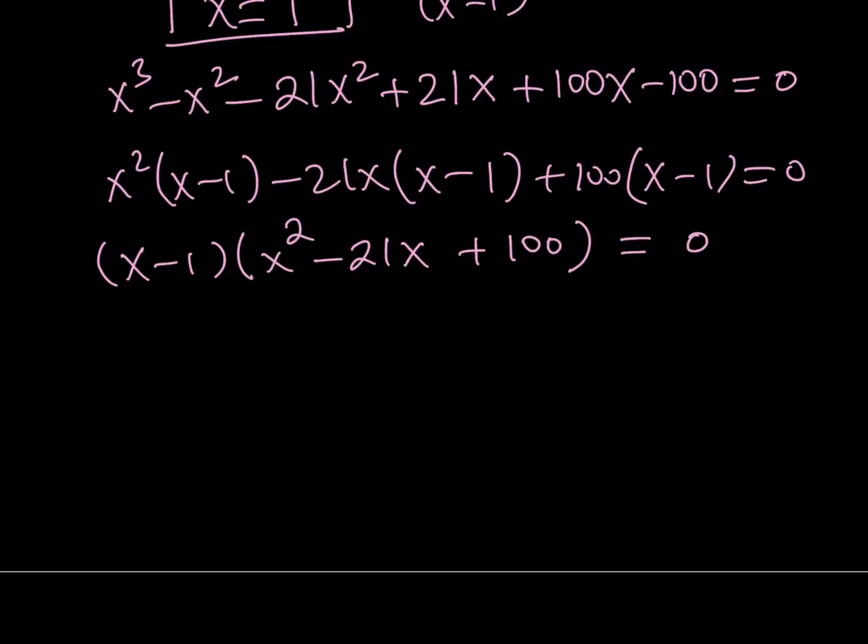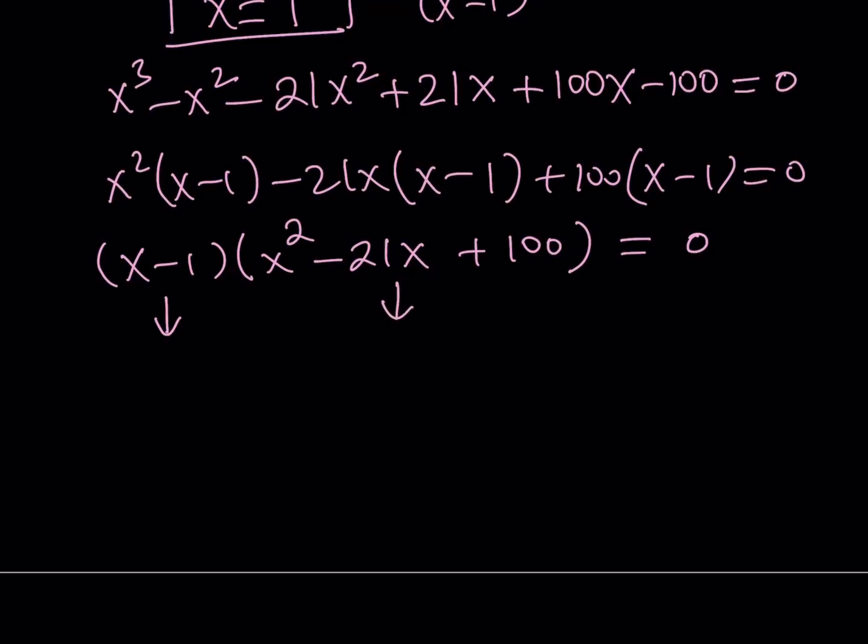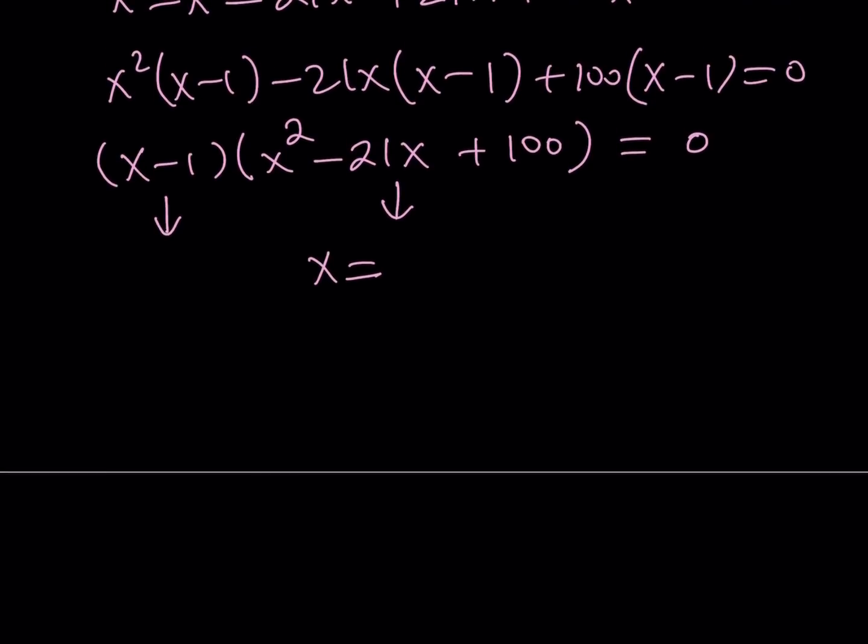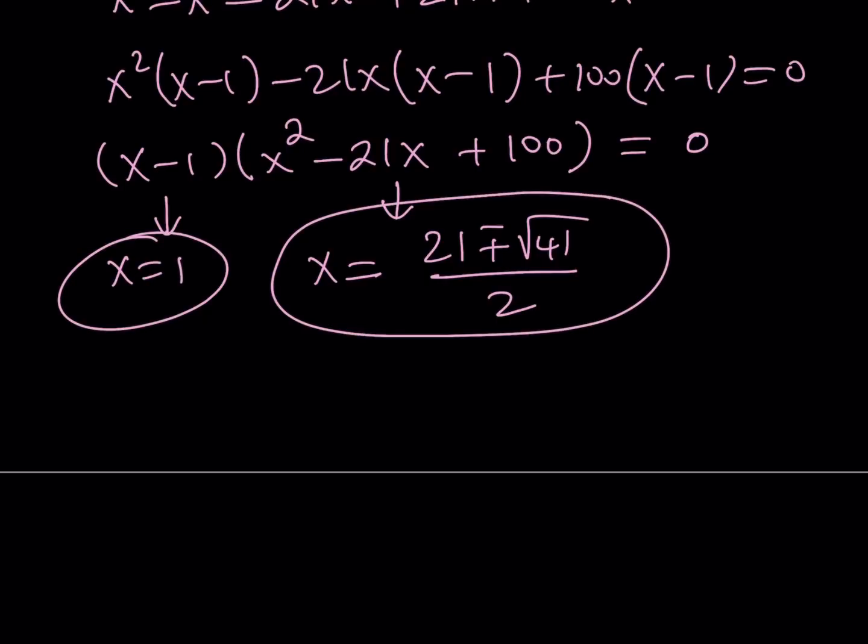From here, obviously, x equals 1. We know that. That's a possible solution. Is that going to give us the answer? We'll talk about that. But let's go ahead and solve the quadratic. If you use the quadratic formula, that would be fairly easy. You're going to get two solutions, and they are going to be real. They're both real, because 21 squared is greater than 4 times 100. So they're going to be like 21 plus minus square root of 41 divided by 2. So we get three solutions for the cubic.